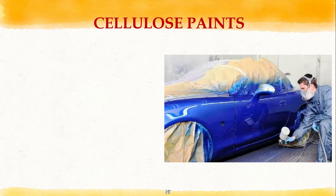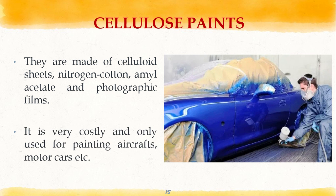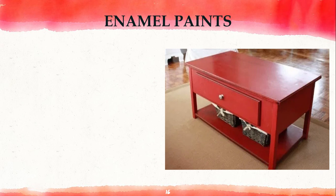Next are cellulose paints. Cellulose paints are a special type of oil paint made up of celluloid sheets, nitrogen cotton, amyl acetate, and photographic films. Unlike normal oil paints where the layer hardens by oxidation, here the layer hardens by evaporation of solvent. It provides a smooth finish and is not affected by smoke, water, or acids. It is very costly and used only for painting aircraft and motor cars.